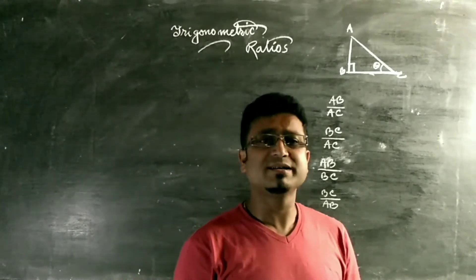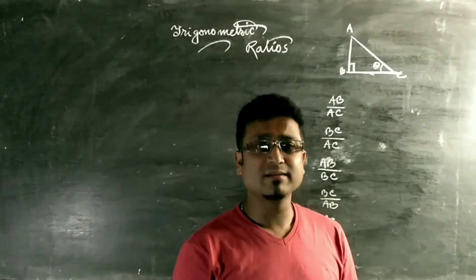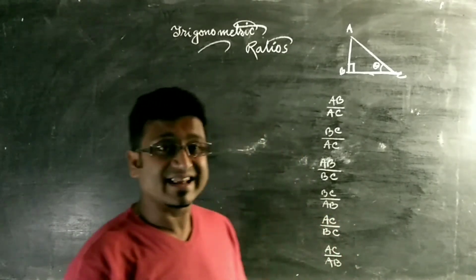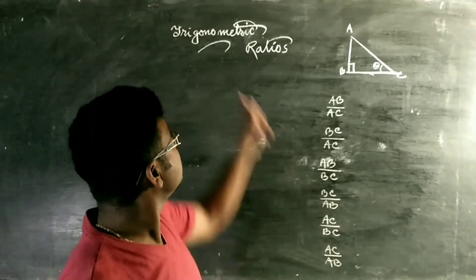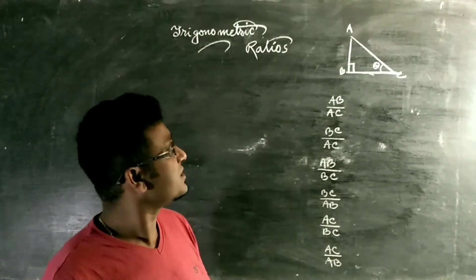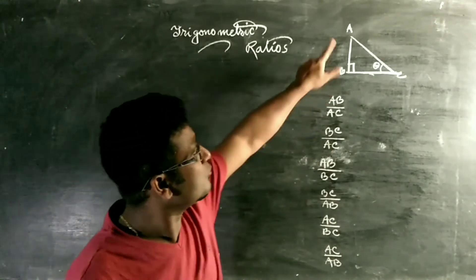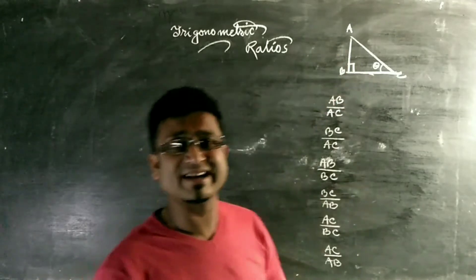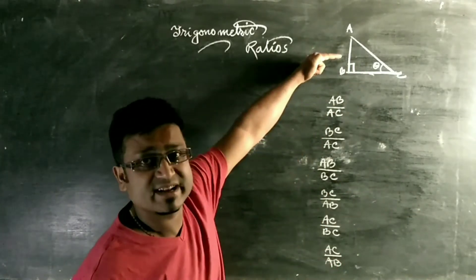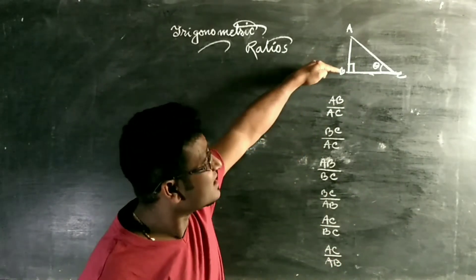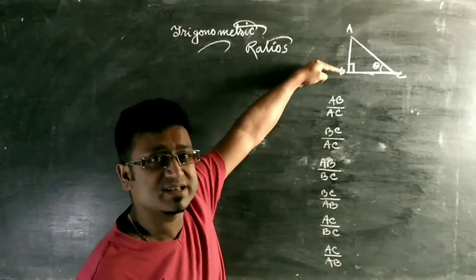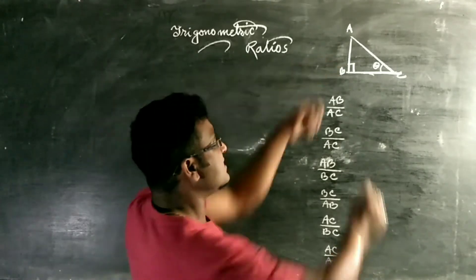Once we know what trigonometry is, what an angle is, and what a ratio is, we can start the next part — that is the trigonometric ratios. For trigonometric ratios, first of all we have to consider a right angle triangle. We detect which angle is the right angle — here angle B is the right angle.